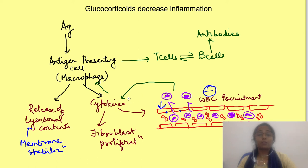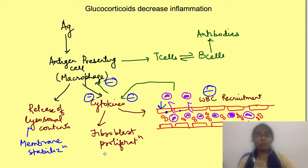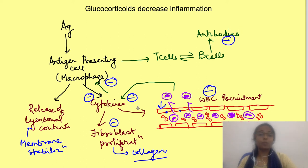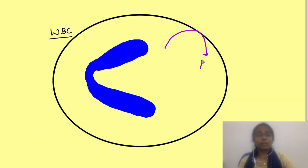Then they decrease the release of cytokines by WBCs, which are responsible for further recruitment and activation of WBCs. Since many cytokines lead to proliferation of fibroblasts which synthesize collagen, this also prevents excess scar formation. Glucocorticoids also inhibit production of antibodies by B lymphocytes. Not only that, they can also induce apoptosis of WBCs.